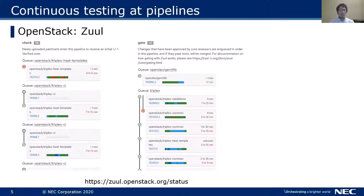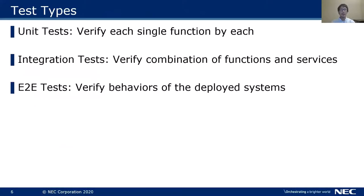The test set consists of coding style check, build check, unit test, integration test, and E2E test in general. Unit tests are for testing the corresponding function. Integration test is for testing the combination of functions or integration with specific services like a database. E2E test is for verifying the behavior of the deployed systems through API calls.